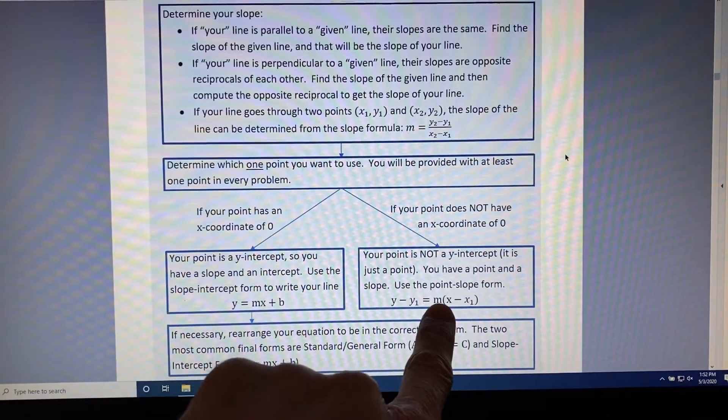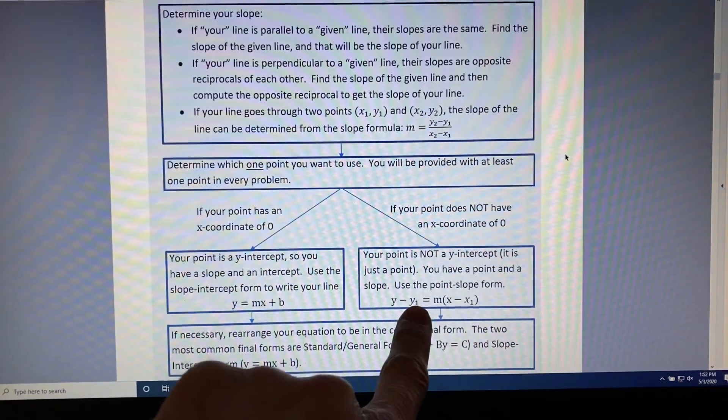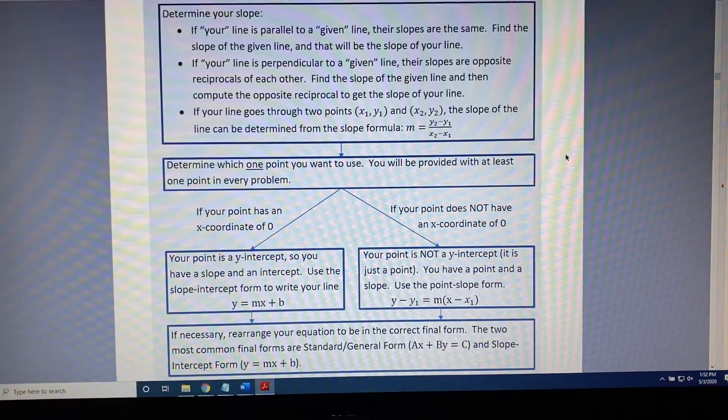y minus y₁ equals m times the difference x minus x₁. Put your slope, m, here, and put the coordinates of your point, (x₁, y₁), here. You now have the equation of your line.